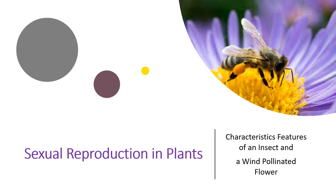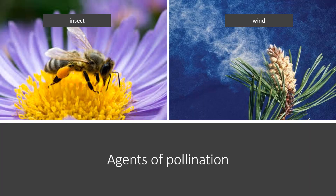The agents of pollination are insect and wind. In sexual reproduction in plants, the pollen — which is the male sex cell — must be transferred to the female part, which is the carpel. It must land on the stigma of the carpel. This process is called pollination. The plant must adapt to obtain the conditions needed for pollination to take place.